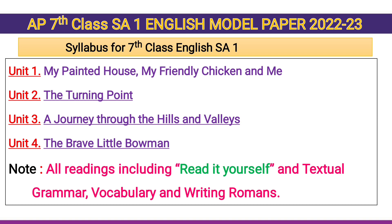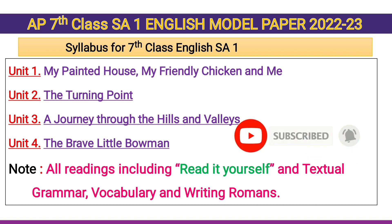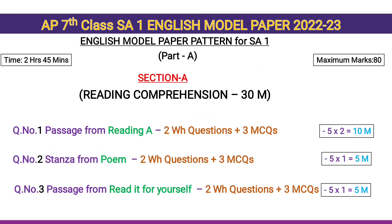Syllabus for 7th class English SA1 is: Unit 1 — My Painted House, My Friendly Chicken and Me. Unit 2 — The Turning Point. Unit 3 — A Journey Through the Hills and Valleys. Unit 4 — The Brave Little Bowman. Note: all readings including Read It Yourself, Textual Grammar, Vocabulary, and Writing. AP 7th class SA1 English Model Paper 2022-23.